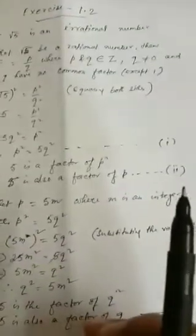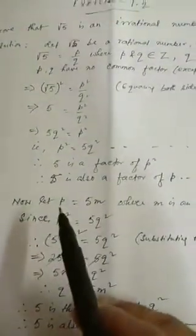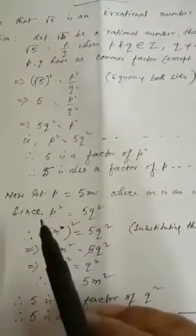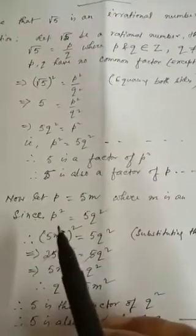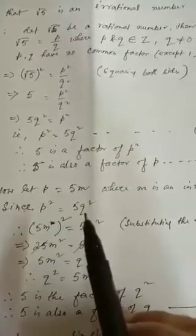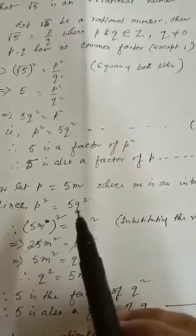Therefore 5 is a factor of p², and therefore 5 is also a factor of p. Suppose this is equation 2. Now let p = 5m, where m is an integer. Since p² = 5q² from equation 1...